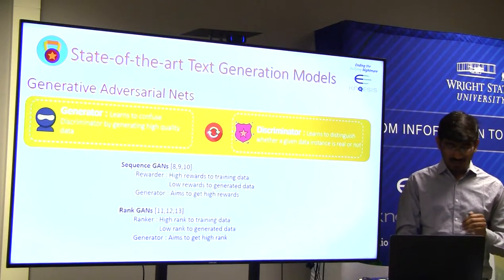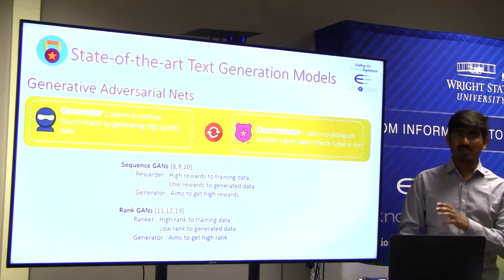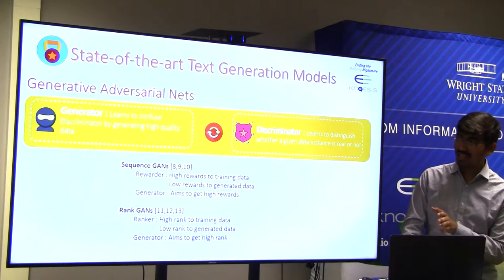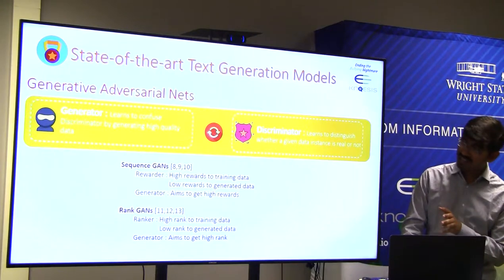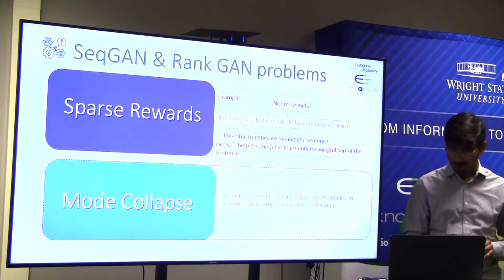Despite their success, these text generation GANs face challenges. They face at least one of the following problems: sparse reward and mode collapse.